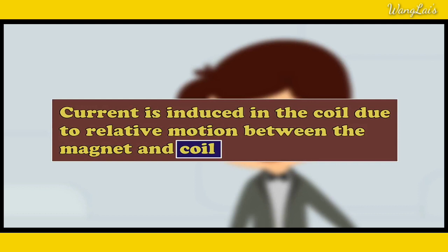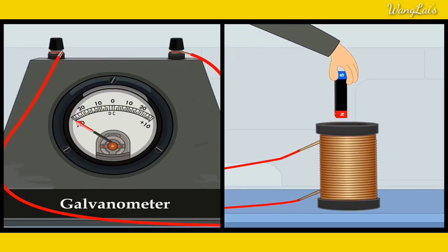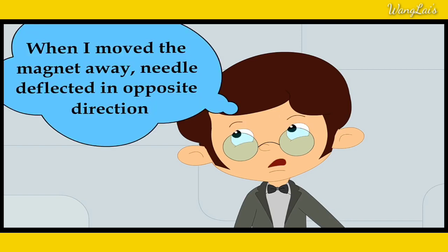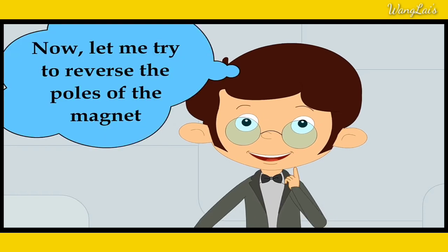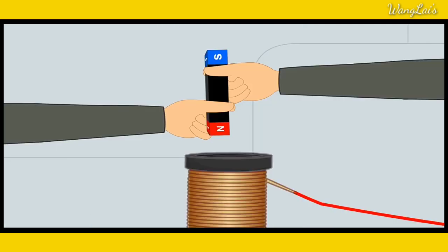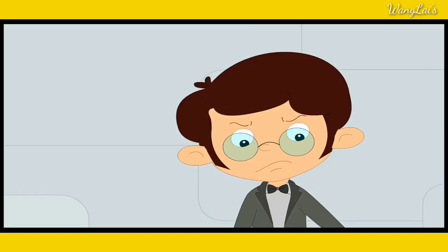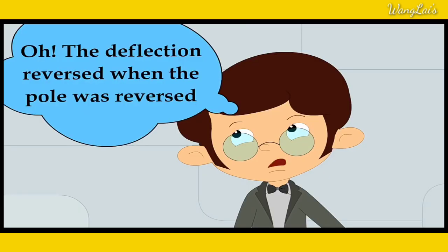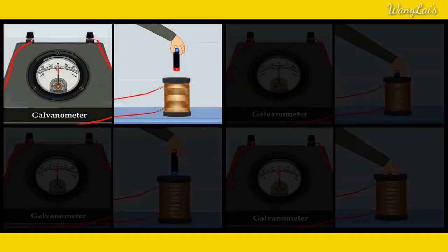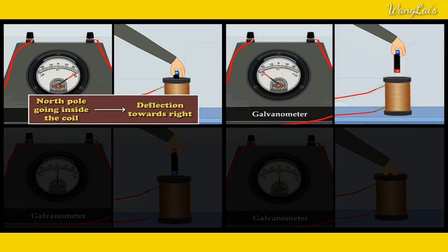The current is in the coil of the magnet. The current is in the direction of the magnet. The current is in the direction of the coil.